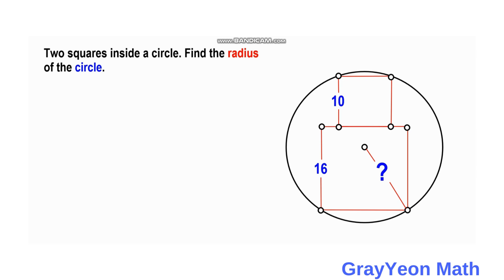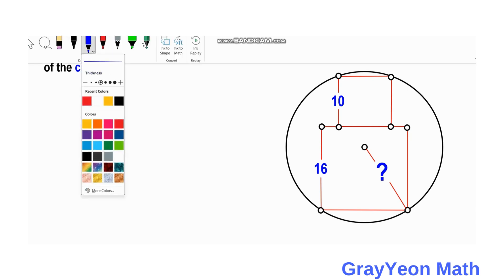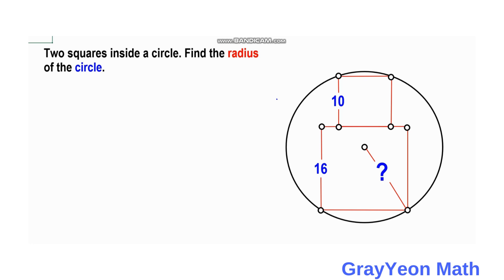Since we are finding the radius, we can draw the radius from the point of the square—the point where the circle intersects—to the center. This is radius r. We also draw from the center to the point of the bigger square downwards, which is also r.